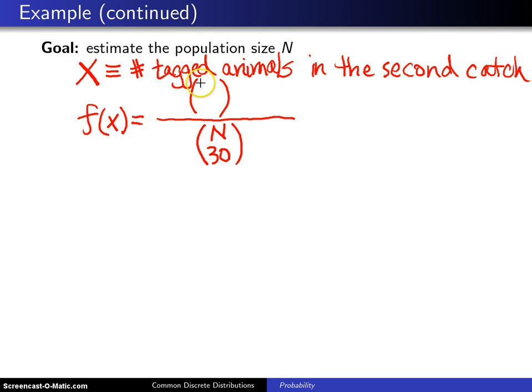In the numerator, of those 20 animals that contain tags from the first catch, we want to have exactly X, and out of the N minus 20 animals that don't have tags, we are going to have 30 minus X of those.